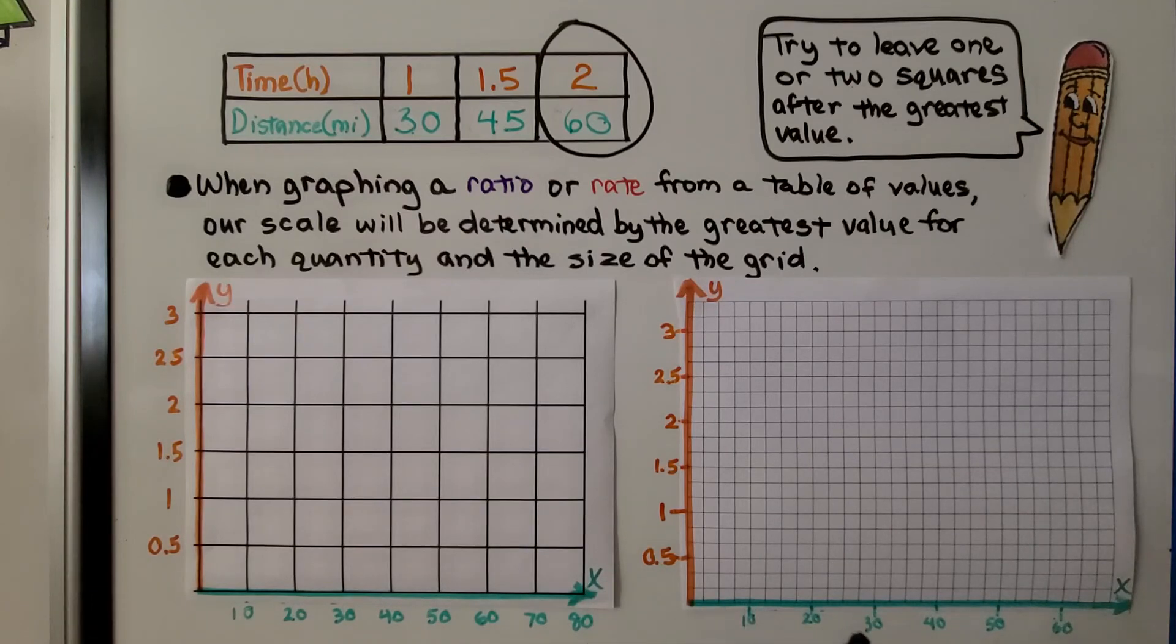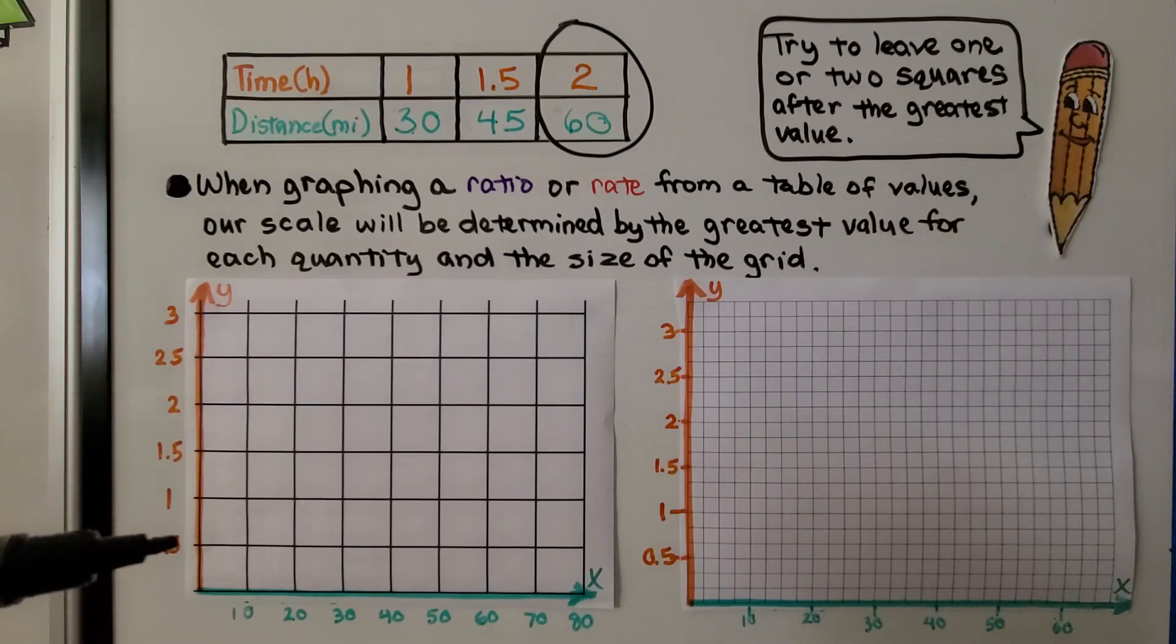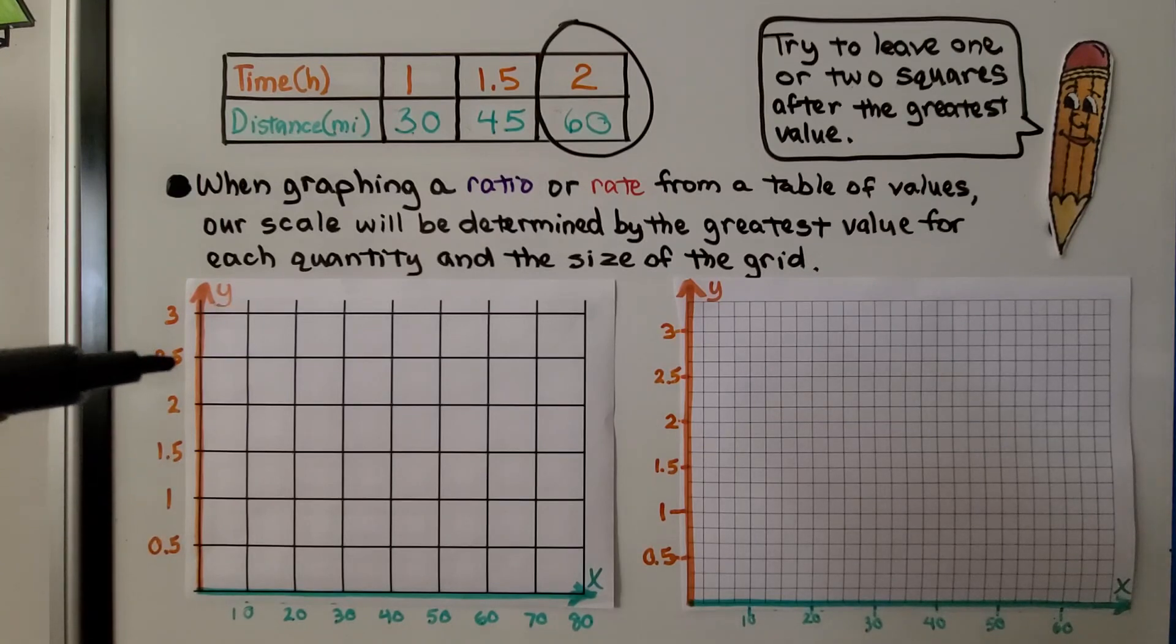But, on this one, we have a lot of lines. We could even label each of these as, like, we could put a 5 here. We could put a 2.5 here. We can open this up more because we have more squares to work with. We want to try to leave one or two squares after the greatest value. So, if we've got a 60 here, I've got mine going to 80 here. And, here it goes to 60, but I've got some squares left over. You don't want it to go right up to the edge. You want to leave a couple of squares. And, even for the 2, I saw that it went 1, 1.5, 2. So, that's how I labeled it. I put a .5 here, a 1, a 1.5, a 2, a 2.5. And then I did the same thing here. So, when we're graphing from a table of values, our scale is going to be determined by the greatest value and what kind of grid we have.